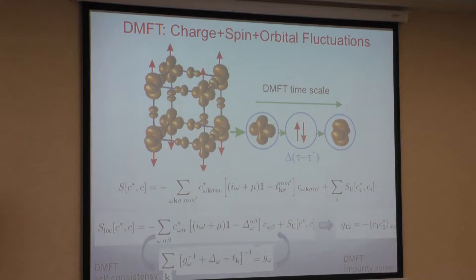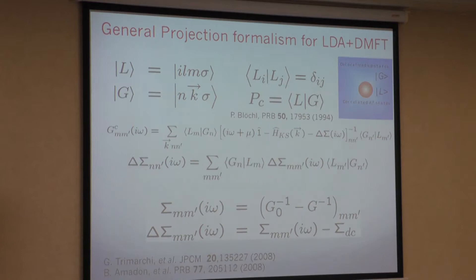If you do real dynamical mean field theory for realistic materials, you have a lot of quantum local fluctuations: orbital fluctuations, spin fluctuations, and also charge fluctuations — but only locally. You then formulate the DMFT self-consistent condition. To do realistic calculations, you need machinery to combine the all-electron density functional with only the correlated electron subset entering the dynamical mean field object.